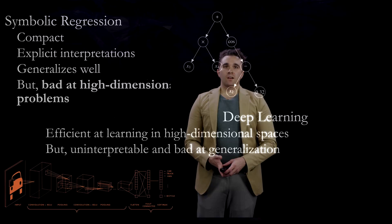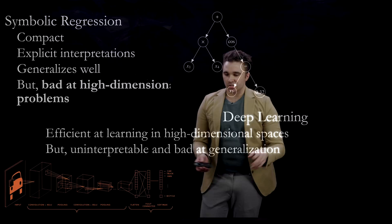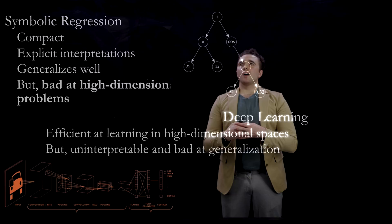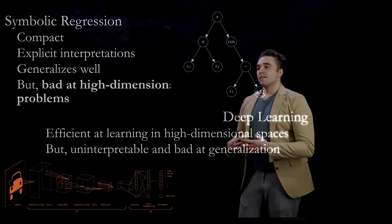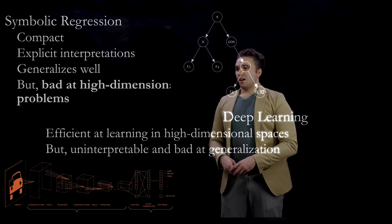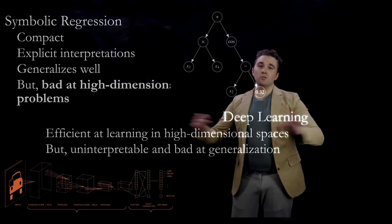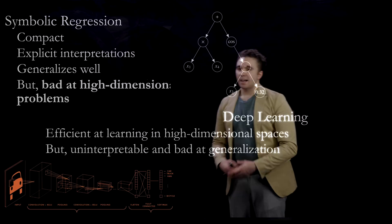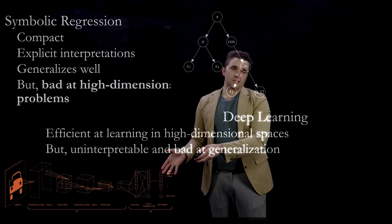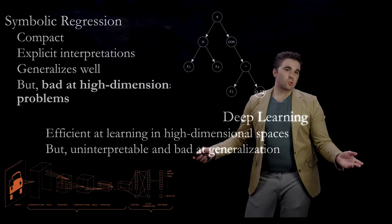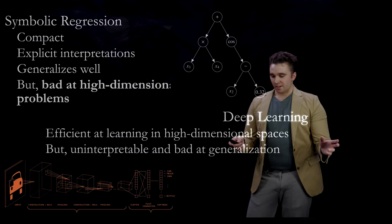Symbolic regression produces compact expressions, gives explicit interpretations, and generalizes well — but it is terrible at high-dimensional problems because you're dealing with combinatorics. The number of possible equations blows up as factorial over the number of features. Deep learning precisely complements this: it's efficient at learning in high-dimensional spaces but uninterpretable and bad at generalization. So the question is: can we combine both strengths?